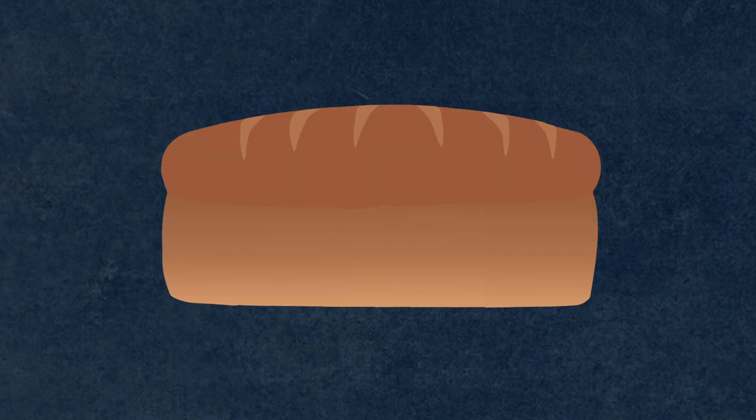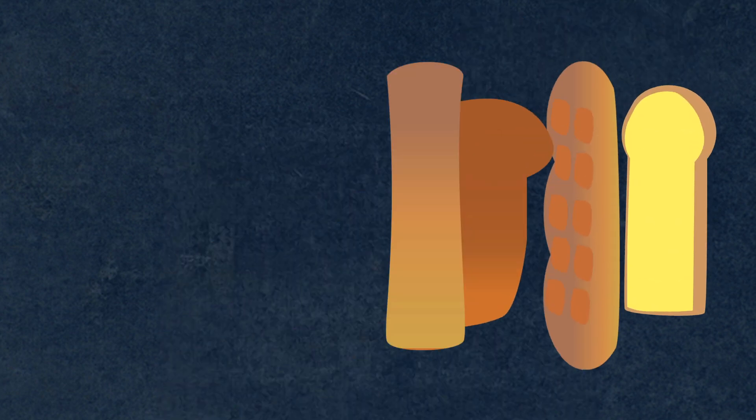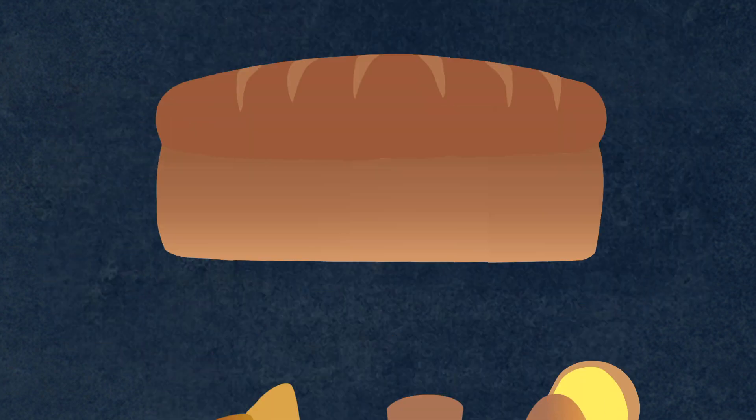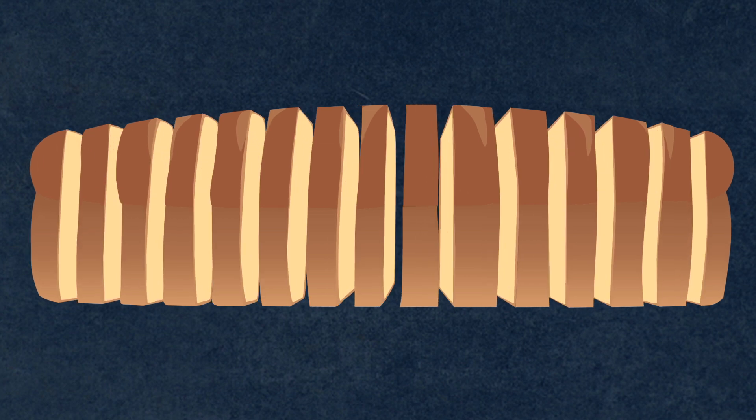But think about a loaf of bread. That's not a composed unit, because we don't get a whole bunch of slices from different bakeries and put them together to make a loaf. No, we start with a loaf of bread, and we cut it into smaller pieces called slices. So each slice of bread is a partitioned unit.